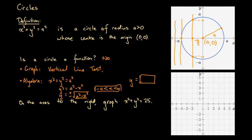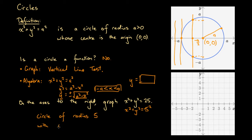The last part asks us to graph x squared plus y squared equals 25. We've established that x squared plus y squared equals a squared is a circle of radius a centered at the origin. Here we can rewrite 25 as 5 squared, so this is exactly that form — a circle of radius 5 with center at the origin, which is the point zero, zero.